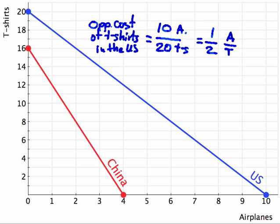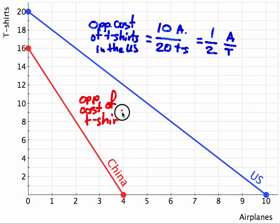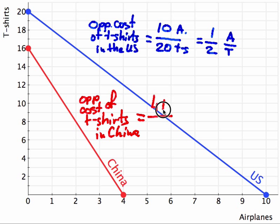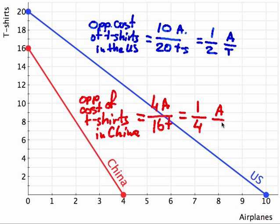Let's do the same calculation for China. The opportunity cost of t-shirts is equal to the number of airplanes that will be sacrificed if China chooses to produce t-shirts. China produces 4 airplanes and will sacrifice 16 t-shirts, which means that the opportunity cost of t-shirts is only one quarter of an airplane per t-shirt.